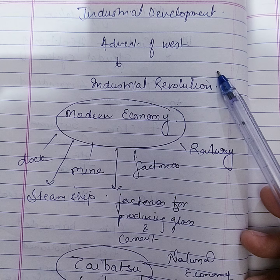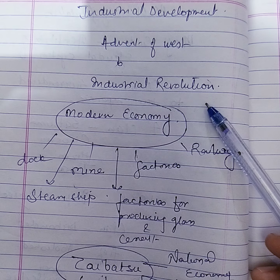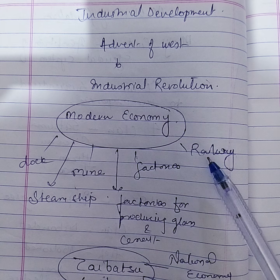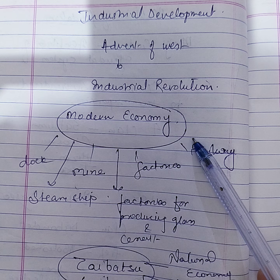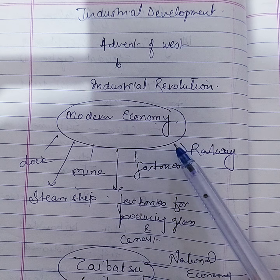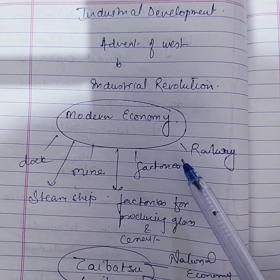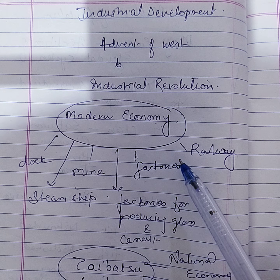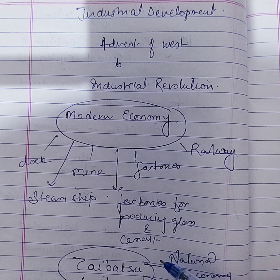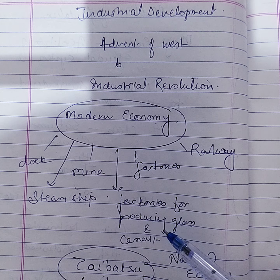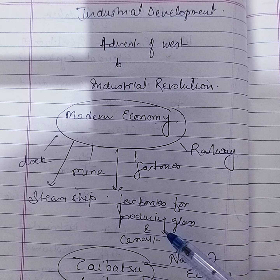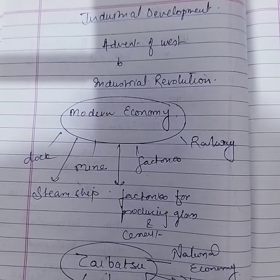The advent of the West brought about the industrial revolution in Japan. The Meiji leaders foresaw that Japan required a modern economy to supply the needs of new military forces and compete with foreign products at home and abroad. The Japanese developed their mines, built factories, railways, and steamships, and established cotton and silk mills, paper mills, chemical works, and factories for producing glass and cement. Once these enterprises were founded, the government generally sold them to favored private interests at extremely low prices.